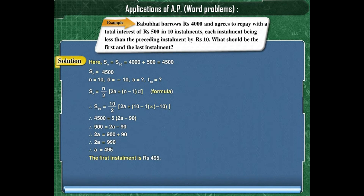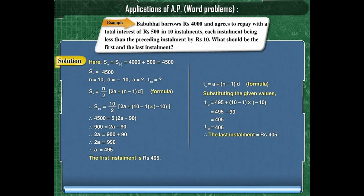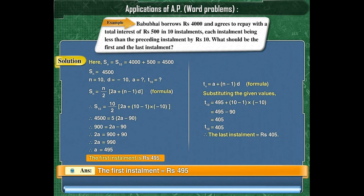Thus the first installment is rupees 495. To find the last installment T10, we use the formula TN = A + (N − 1) × D. Substituting the given values, T10 = 495 + (10 − 1) × (−10), which simplifies to T10 = 405. Therefore, the first installment is rupees 495 and the last installment is rupees 405.